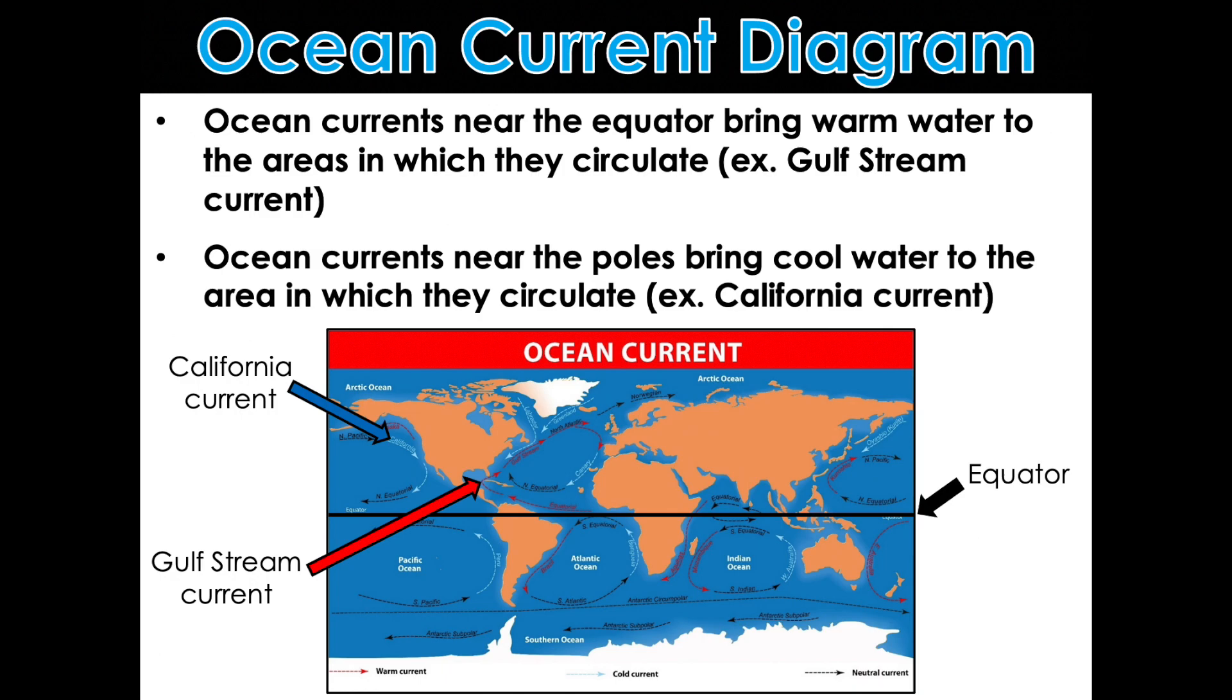So, ocean currents near the equator are going to bring warm water to the areas in which they circulate. Ocean currents near the poles bring cool water to the areas in which they circulate. If you have an activity that you're going to be doing tomorrow, this is very, very important for what you're going to have to do.